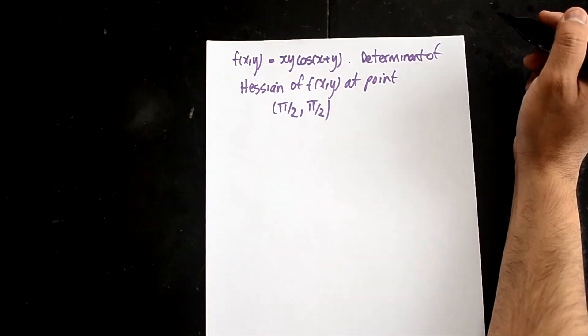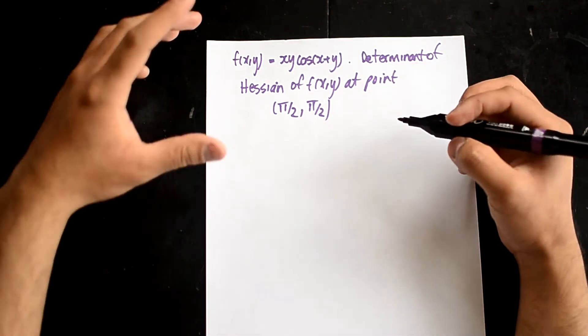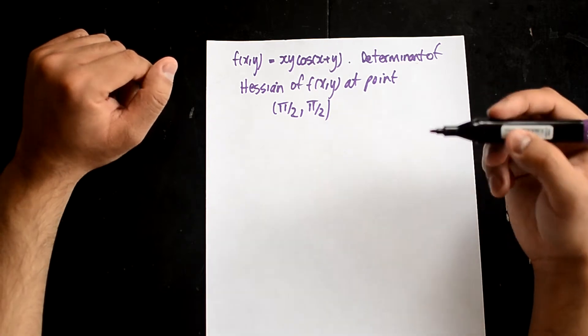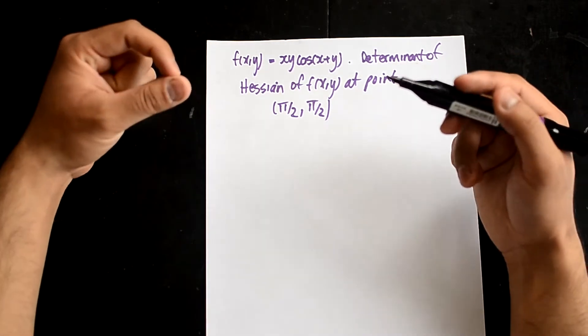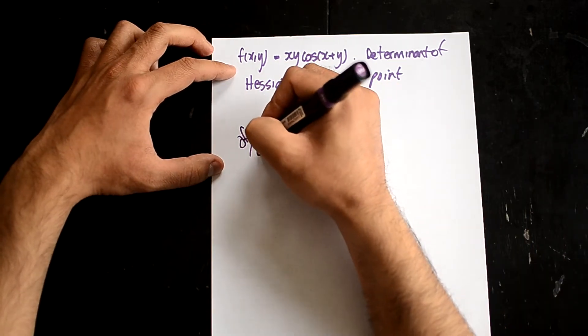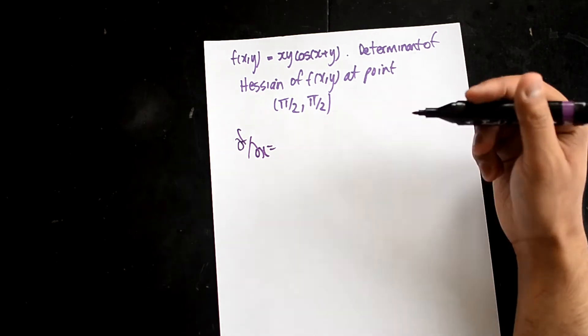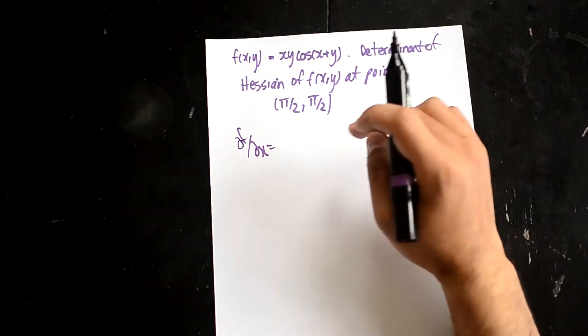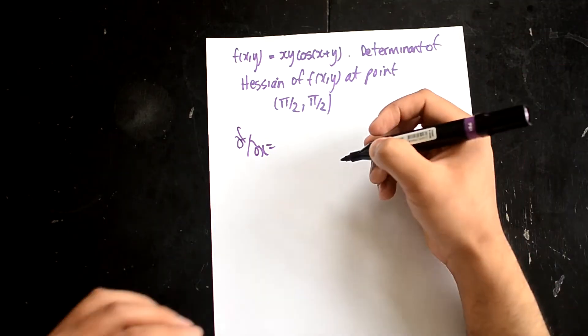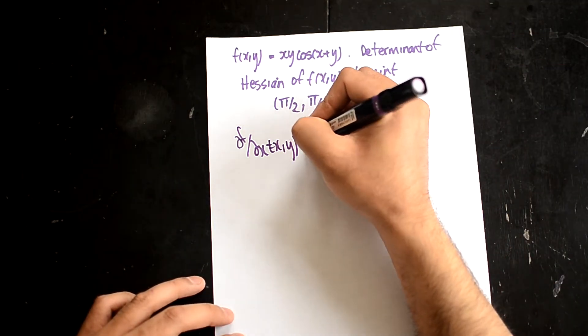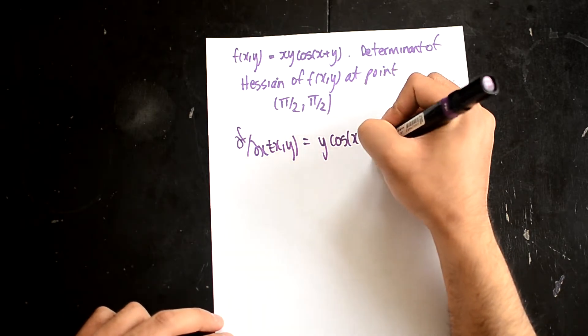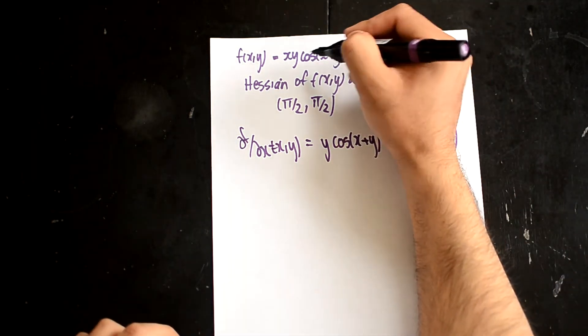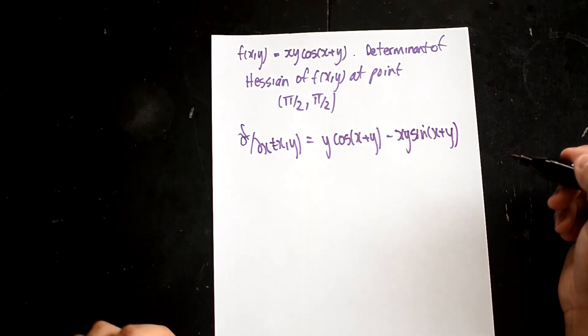So what you first need to do is do df/dx, df/dy, d²f/dx², d²f/dy², and d²f/dydx. So let's start by doing df/dx. In previous videos, I've gone over product rule and partial derivatives, so you should be quite familiar with it. The differentiation of df/dx, you hold the y's constant. So you should get df/dx = y cos(x+y) - xy sin(x+y). This is using the product rule as we have two little parts here.